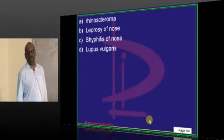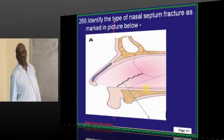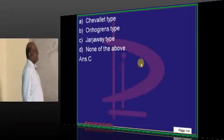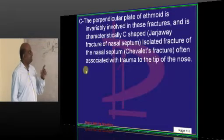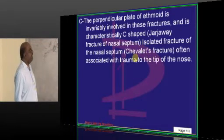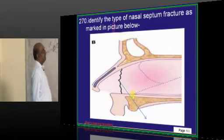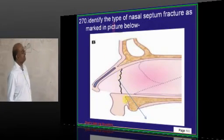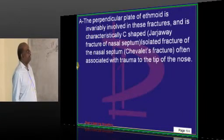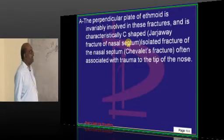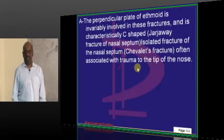Woody nose with a granuloma, classically of rhinoscleroma. What is the kind of the nasal septal fracture you are able to see? It is a case of Jarjavay type of fracture. Jarjavay is C-shaped fracture of the nasal septum. Whereas, the Chevalet's fracture is isolated fracture of the nasal septum. What is the type of nasal septum fracture? This one. This is called Chevalet's. Perpendicular plate of ethmoid is the one which is involved. And C-shaped is Jarjavay. And Chevalet is isolated fracture of the nasal septum.